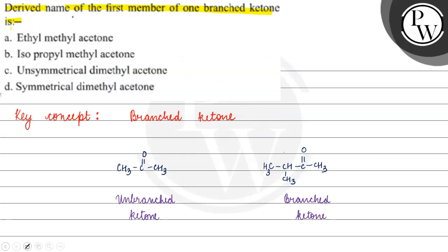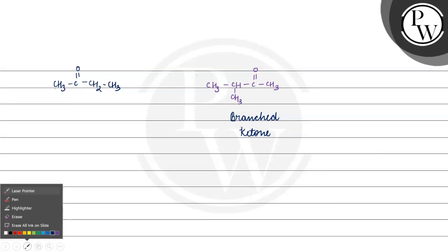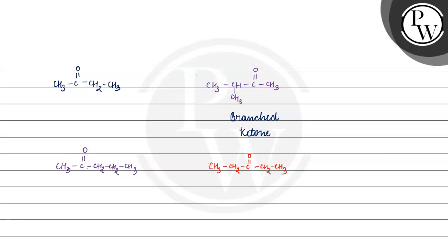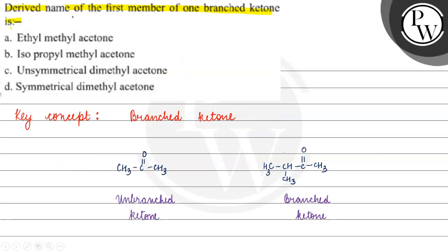Next, option C is unsymmetrical dimethyl acetone — this is just unsymmetrical dimethyl acetone with no branches. Option D is symmetrical dimethyl acetone — also no branches present. So those are incorrect. The correct answer for this question is option B. I hope you understood it well. Thank you and all the best.